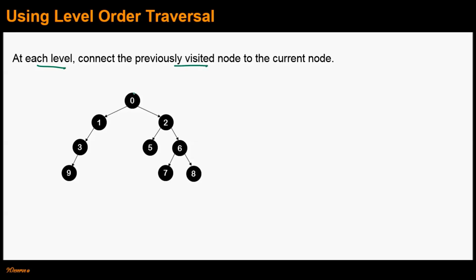At level 0 there is only one node, node 0, so we don't need to do anything. At level 1, node 1 is the first node we visit, so we do nothing. When we visit node 2, the previously visited node at level 1 was node 1, so we connect the previously visited node to the current node — this is the next right pointer for node 1. At level 2, node 3 is the first visited node, so we don't do anything. When we visit node 5, the previously visited node is node 3, and we connect them using the next right pointer. Similarly we connect node 5 to node 6 and so on. Using level order traversal for populating next right pointers is a very simple and intuitive approach.